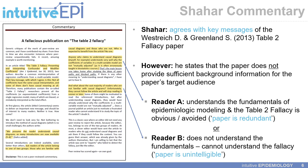However, Shahar states that the paper published in 2013 in the American Journal of Epidemiology does not provide sufficient background information for its target audience — people who are propagating or committing the Table 2 Fallacy. He identifies two types of readers: Reader A, who already understands the fundamentals of epidemiologic modeling and avoids the fallacy, making the paper redundant for them; and Reader B, who does not understand these fundamentals and therefore finds the paper essentially unintelligible.